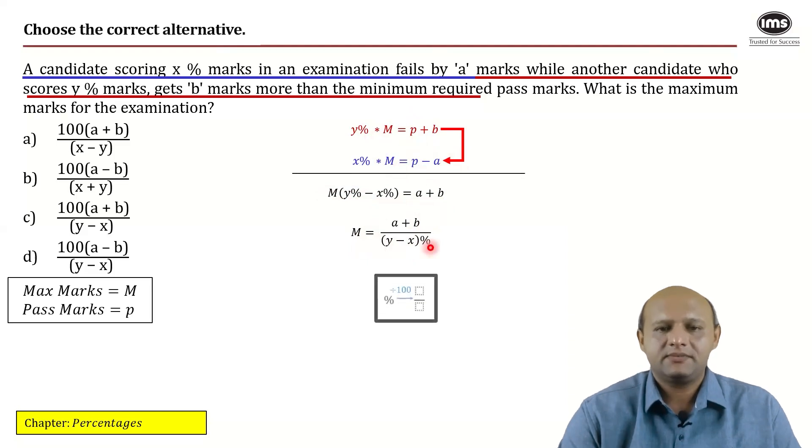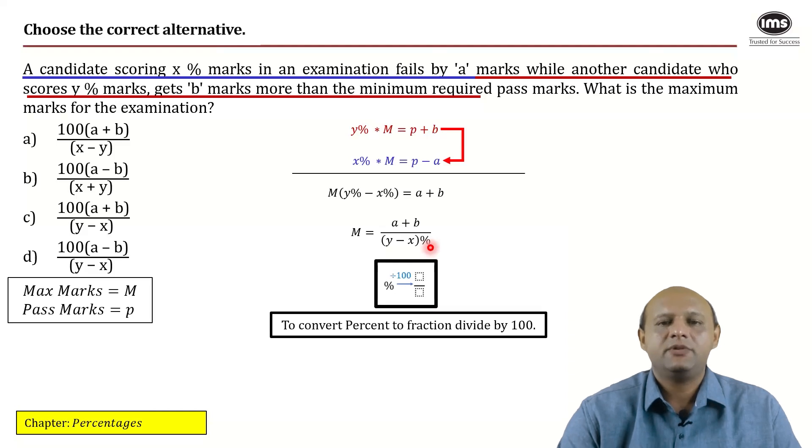How will you convert percentage to fractions? Just divide it by 100. So when you divide this by 100, you get 100 times A plus B upon Y minus X, which is equal to the maximum marks for that subject, which is option 3.